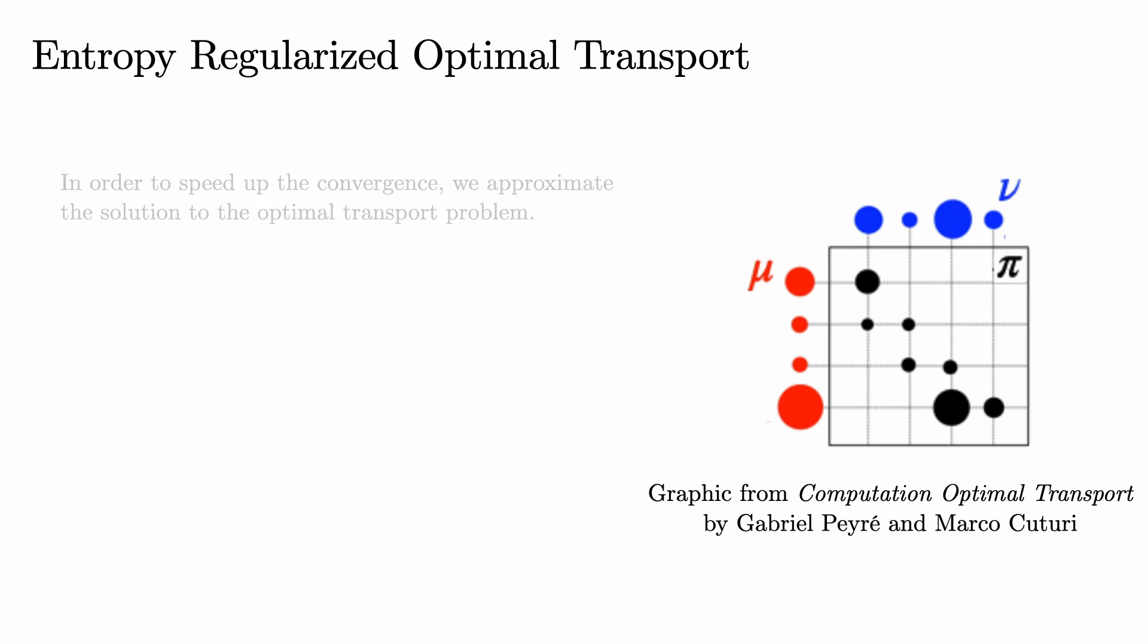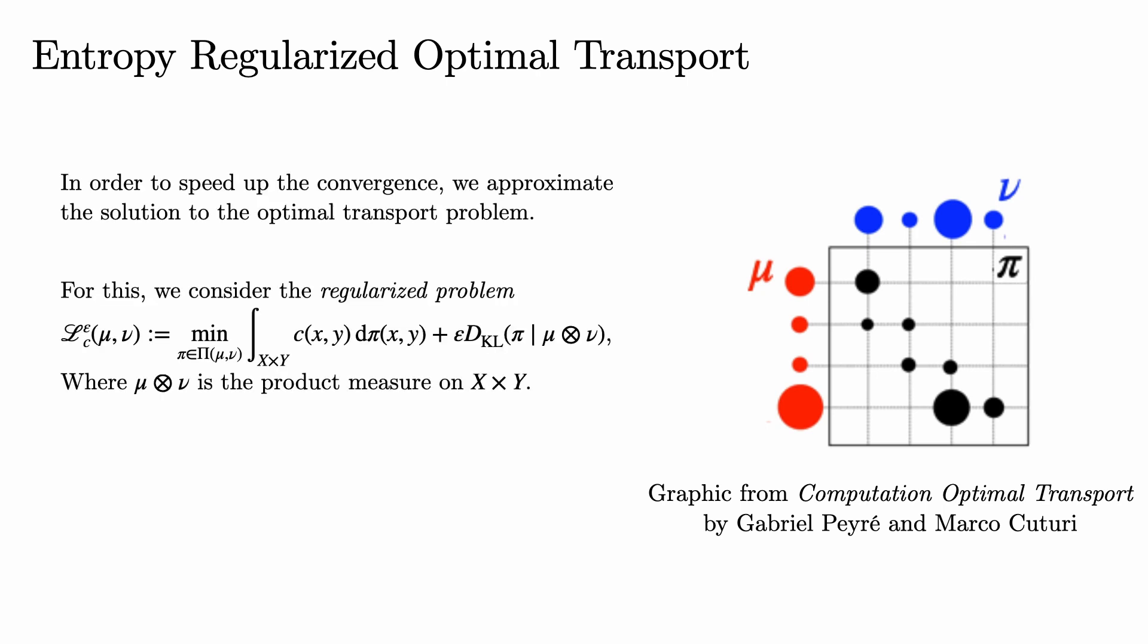For this, we consider the following regularized problem. Here, mu tensor nu is the product measure on x times y. In other words, the mass at each point in x times y is just the mass of the corresponding point in x times the mass of the corresponding point in y. By adding this extra KL divergence slash entropy term, the optimal transport problem becomes strongly convex, which makes it amenable to more efficient computation techniques.